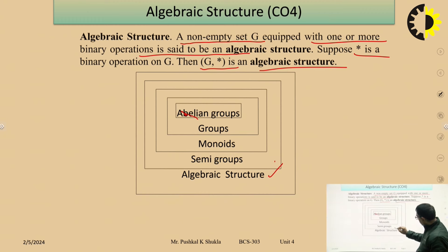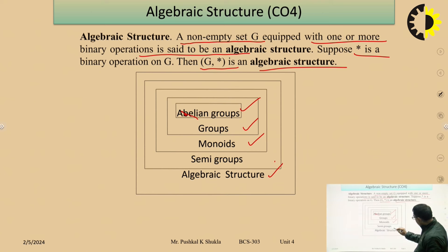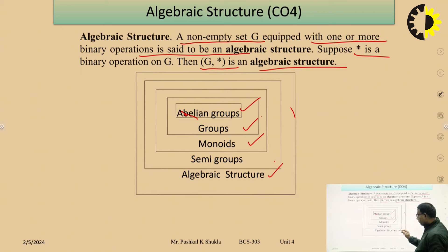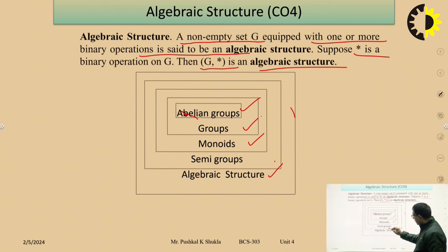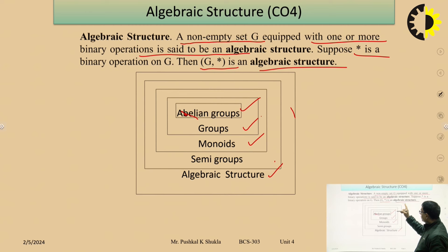Now, semi-groups, monoids, groups, and abelian groups. Here we see that algebraic structure is the superset of abelian groups, groups, monoids, and semi-groups. If we impose some restriction on the algebraic structure, then it becomes a semi-group. So an algebraic structure (G, star) satisfies the closure property on the set G.